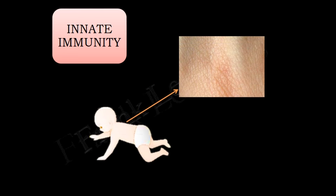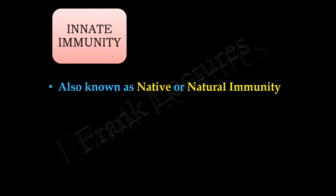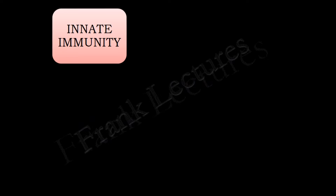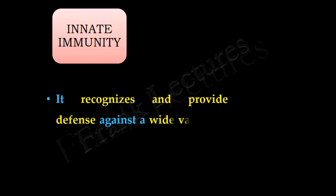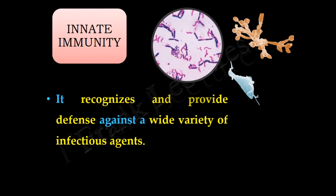For example, our skin is a barrier to pathogens. The sweat glands and oil glands present beneath the skin secrete antimicrobial substances. Innate immunity is also known as native or natural immunity. It provides an early defense against infections and recognizes a wide variety of infectious agents including bacteria, fungi, protozoa, and viruses.